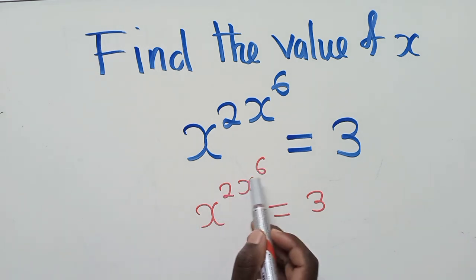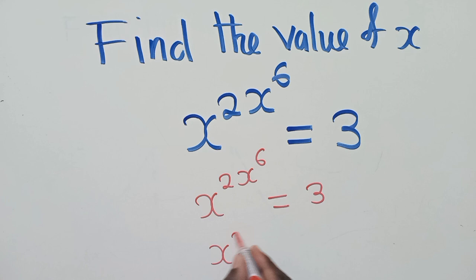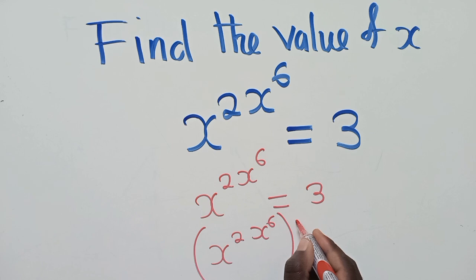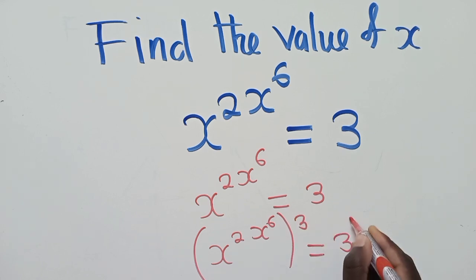So now how do we make it have the same power as this? Of course we just say x there power, power 2, and x here power 6, and then everything power 3, which is equal to 3 power 3.